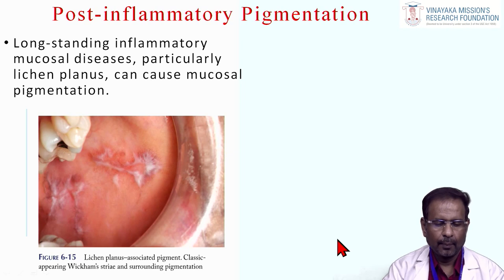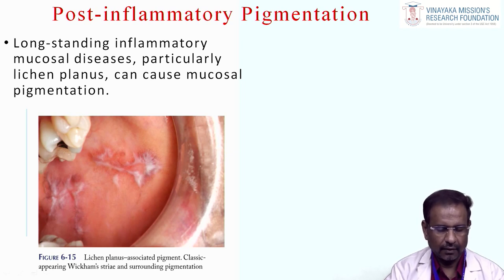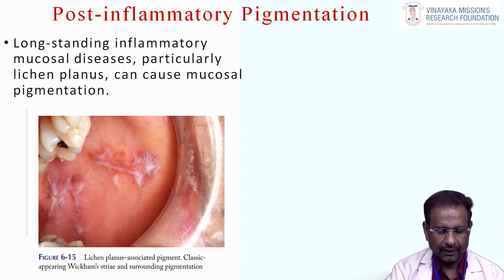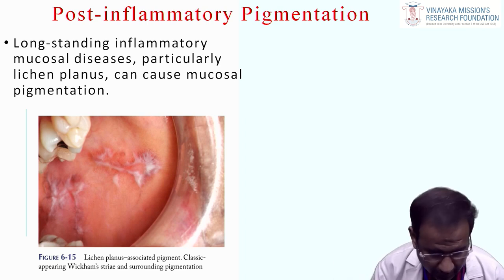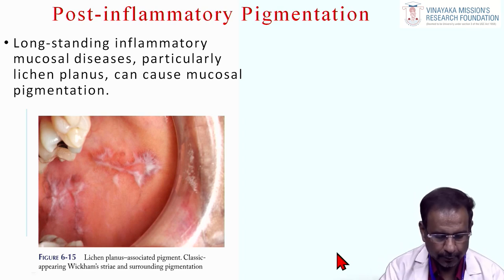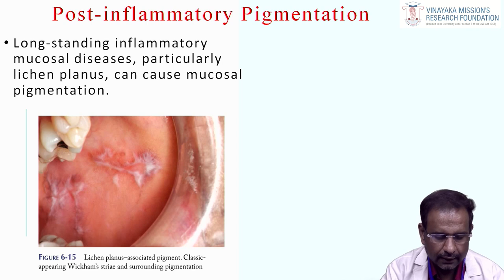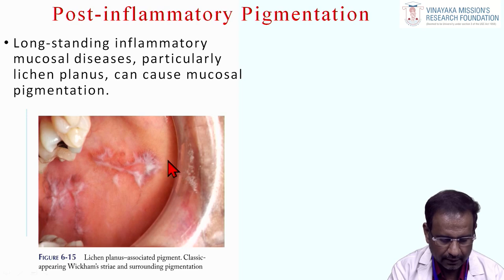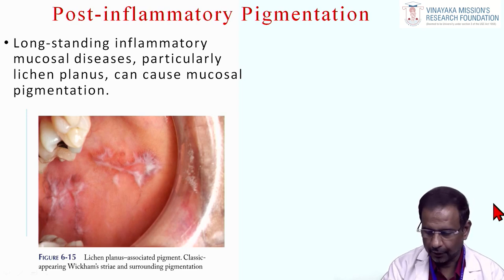Post-inflammatory pigmentation: long-standing inflammatory mucosal lesions, particularly lichen planus, can cause mucosal pigmentation. Lichen planus is an autoimmune disorder that occurs on the buccal mucosa. In the healing stage, it creates pigmentation — the lesion becomes dry as it heals and leaves behind pigmentation.